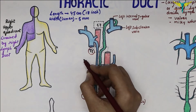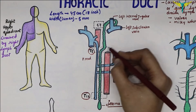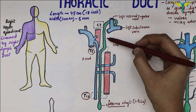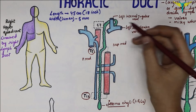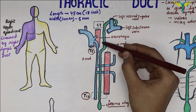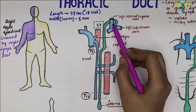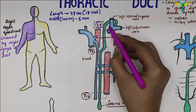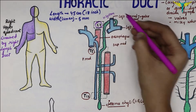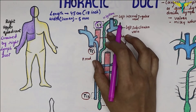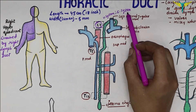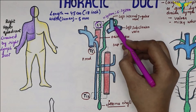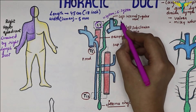The thoracic duct enters the superior mediastinum from the posterior mediastinum, crossing at T5 from right to left. It runs along the left border of the esophagus and reaches the root of the neck, where it arches laterally at the level of C7 vertebra. It passes in front of the vertebral artery and vertebral vein (the vertebral system) and the left cervical sympathetic trunk, and behind the carotid system — the left common carotid artery, left internal jugular vein, and left vagus nerve. The summit of this arch lies 3 to 4 cm above the clavicle.